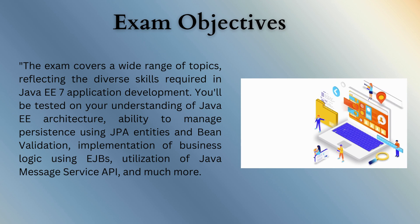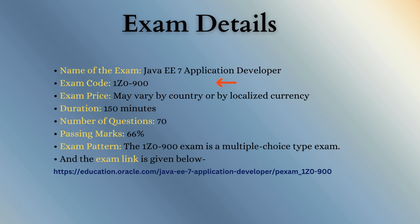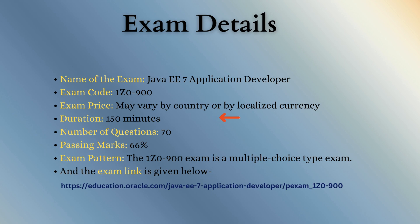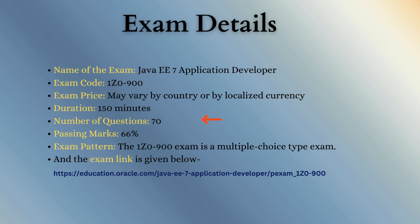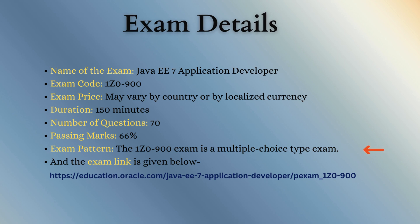Here are the exam details. The name of the exam is Java EE-7 Application Developer. Exam code is 1Z0-900. Exam price may vary by country or by localized currency. Duration of the exam is 150 minutes. Number of questions is 70. Passing marks of the exam is 66%. It is a multiple-choice type exam, and the exam link is given below.